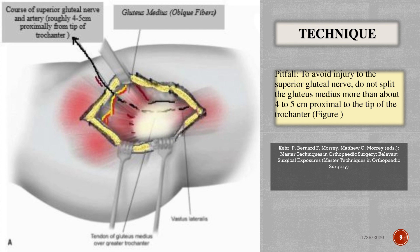Pitfall: to avoid injury to the superior gluteal nerve, do not split the gluteus medius more than 4 to 5 cm proximal to the tip of the trochanter.